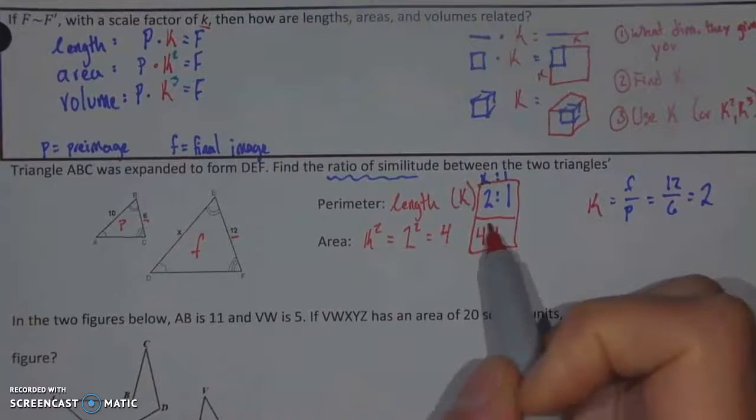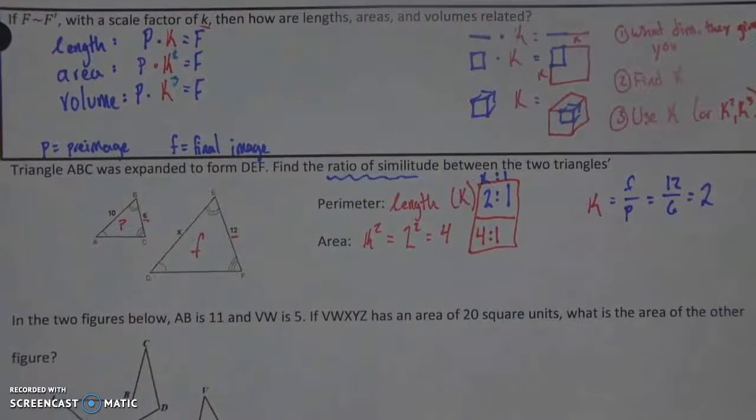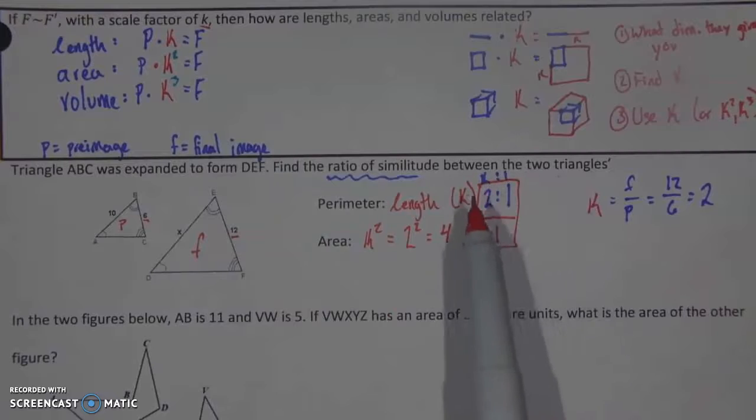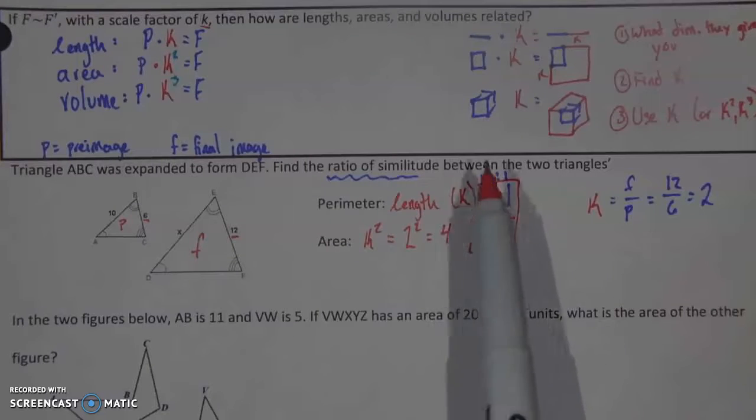Notice area, second dimension, it is squared. One thing to keep in mind is if they give us volume you're just going to go back to k, take that k which is 2, cube it and get 8 so we'd have an 8 to 1 volume.